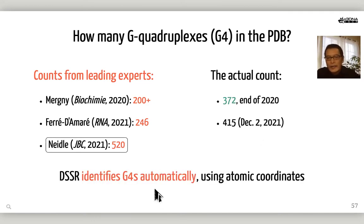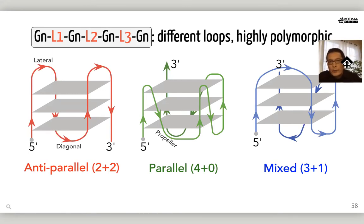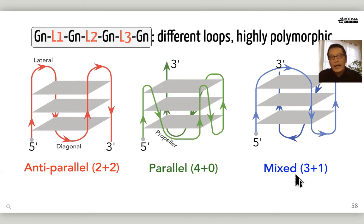I used DSSR to identify G-quadruplexes automatically from atomic coordinates, giving the number without ambiguity. To give a quick overview of G-quadruplexes: unimolecular G-quadruplexes are formed by G-tetrads connected by loop regions. The loop can be lateral, diagonal, or propeller with a double-chain reversal. Depending on the loop orientation, the G-quadruplex can be antiparallel, parallel, or mixed. Overall, G-quadruplexes are highly polymorphic, much more complicated than double-helix DNA or RNA.